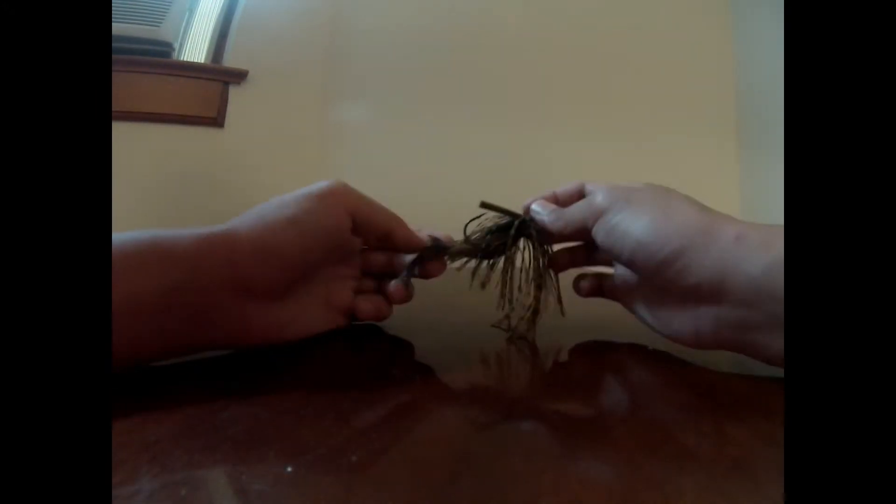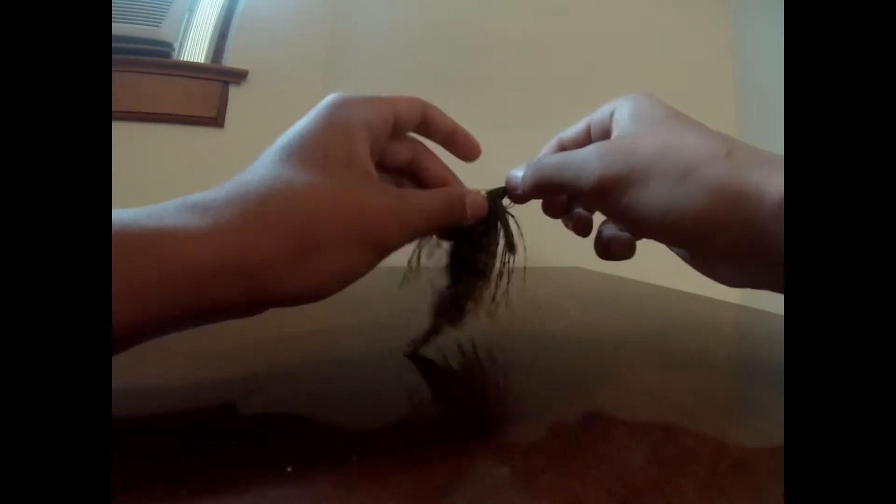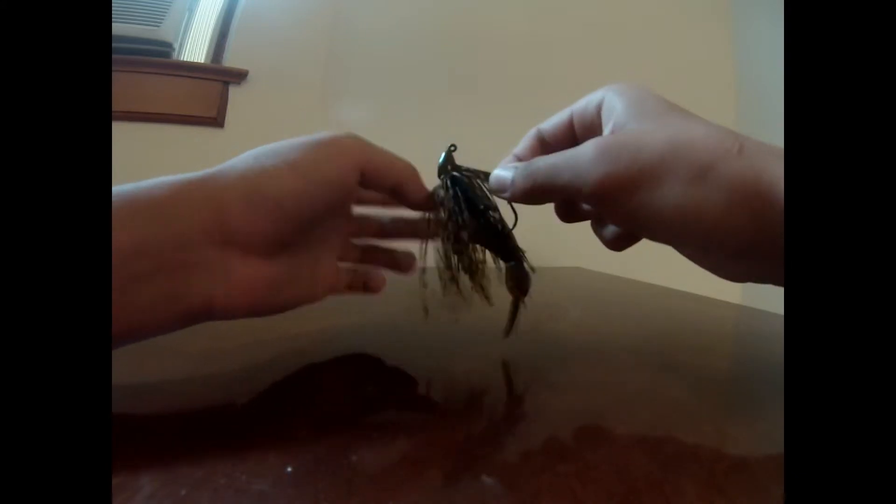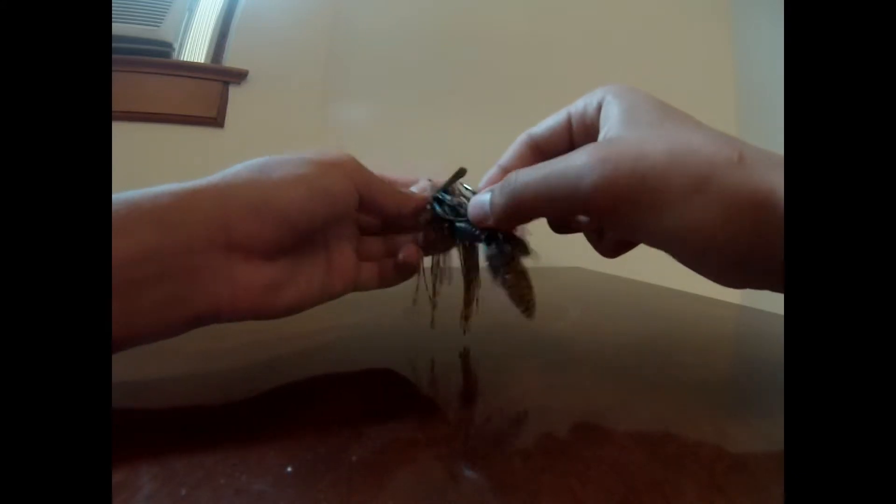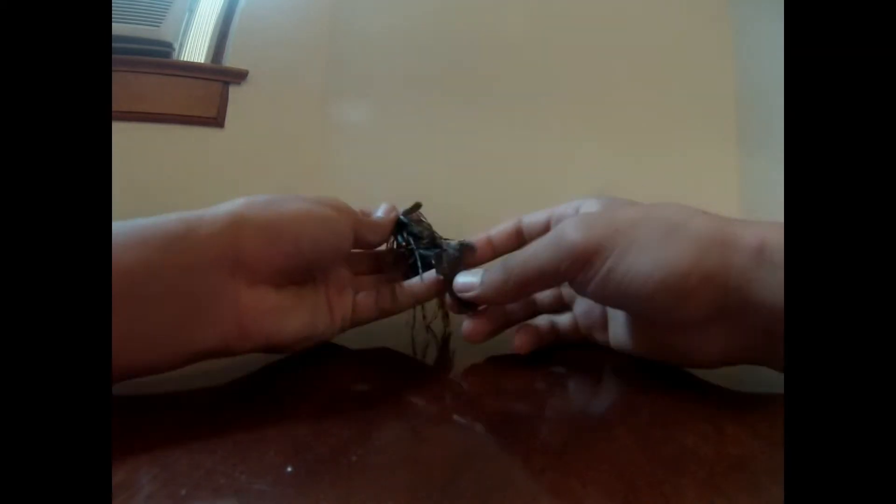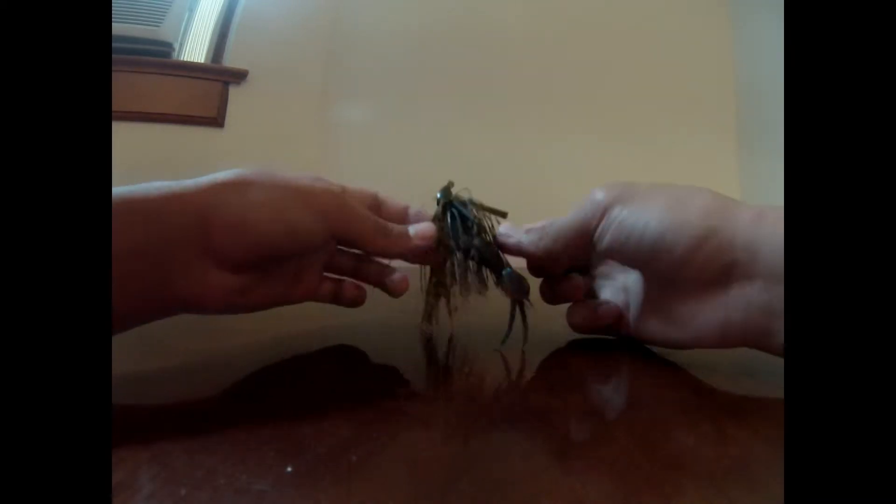My second favorite bait is a swim jig. You can use different colors and different types for different clarity of water and what kind of places that you're fishing at. I like to use a nice colored trailer on the back that sometimes matches the jig.